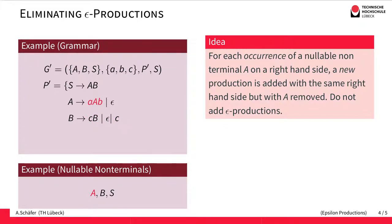For another right-hand side where A is nullable, we add a new right-hand side with the nullable non-terminal A removed, so we add AB. And in the production where both A and B are nullable: since B is nullable we add a production replacing S by A, and since A is nullable we add a production replacing S by B. This simulates the idea that we could derive the empty word from either B or from A.